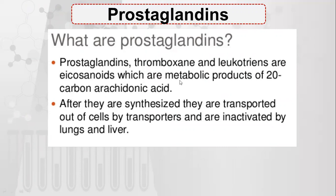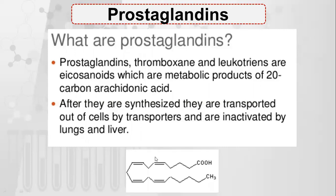Next are prostaglandins, which are metabolic products of 20-carbon arachidonic acid — a 20-carbon polyunsaturated fatty acid with 4 double bonds. These are eicosanoids, which are then converted into prostaglandins, thromboxanes, and leukotrienes. After they are synthesized, they are transported out of cells by transporters and then inactivated by the lungs and liver.